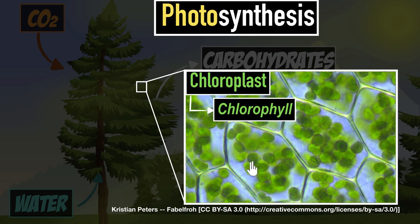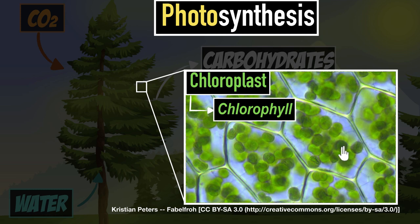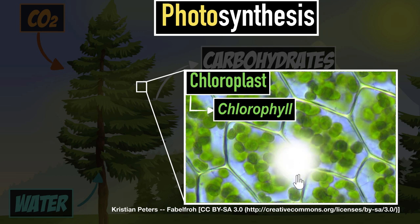Here's how to think about it: imagine we're focusing on one chloroplast. As sunlight hits it, the chlorophyll absorbs that energy and makes it available to all the molecules. Now they have the energy to take in carbon dioxide and water and carry out the photosynthesis reaction, which produces juicy carbohydrate molecules and oxygen — and the oxygen gets thrown out.